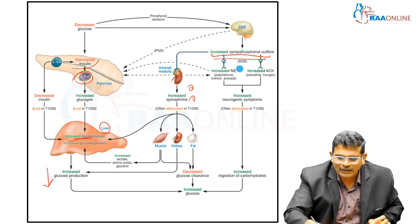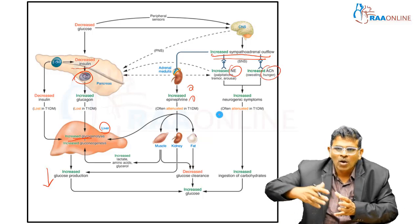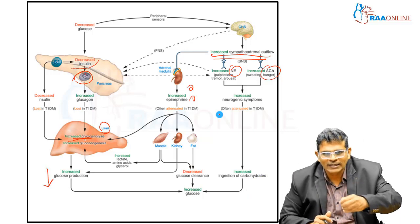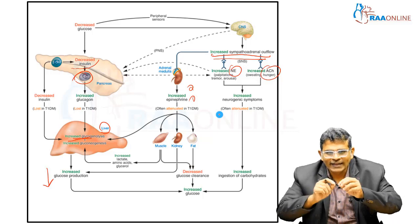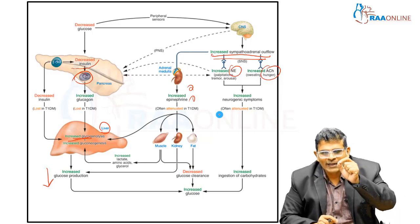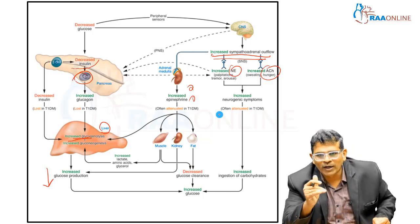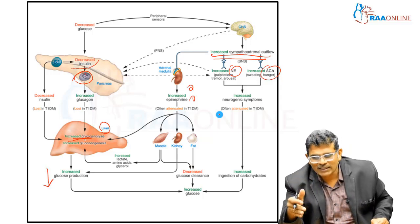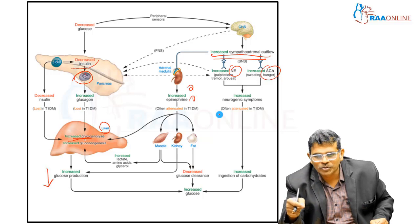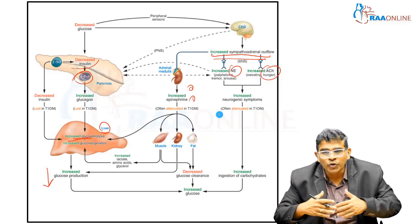Increased acetylcholine is also released. The cholinergic transmitter acetylcholine and norepinephrine are secreted from postganglionic receptors, while epinephrine is secreted from the sympathoadrenal axis. Norepinephrine causes increased palpitations, tremors, and arousal. Acetylcholine, through cholinergic symptoms, causes sweating, hunger, and dryness. This leads to increased neurogenic symptoms.